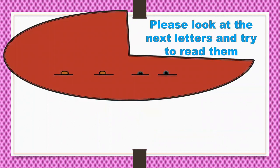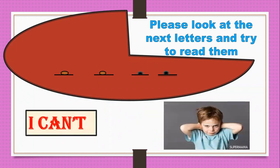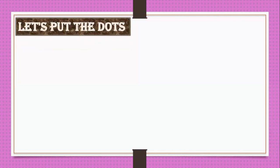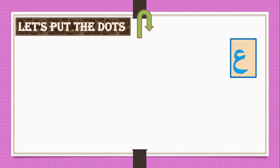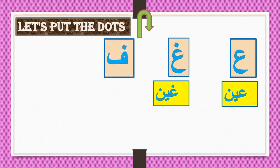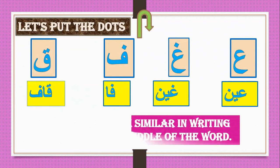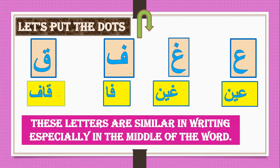Please look at the next letters and try to read them. Can you read? Let's add the dots. What is this letter? Yes — Ayn. What is this letter? Yes — Ayn. What is this letter? Yes — Fa. What is this letter? Yes — Qaf. These letters are similar in writing, especially in the middle of the word.